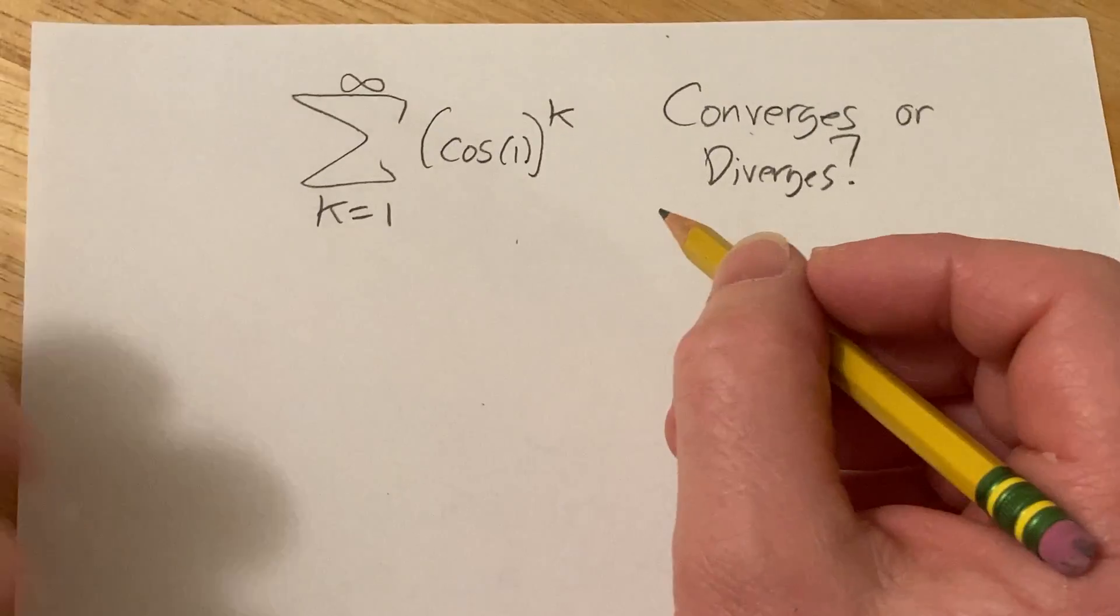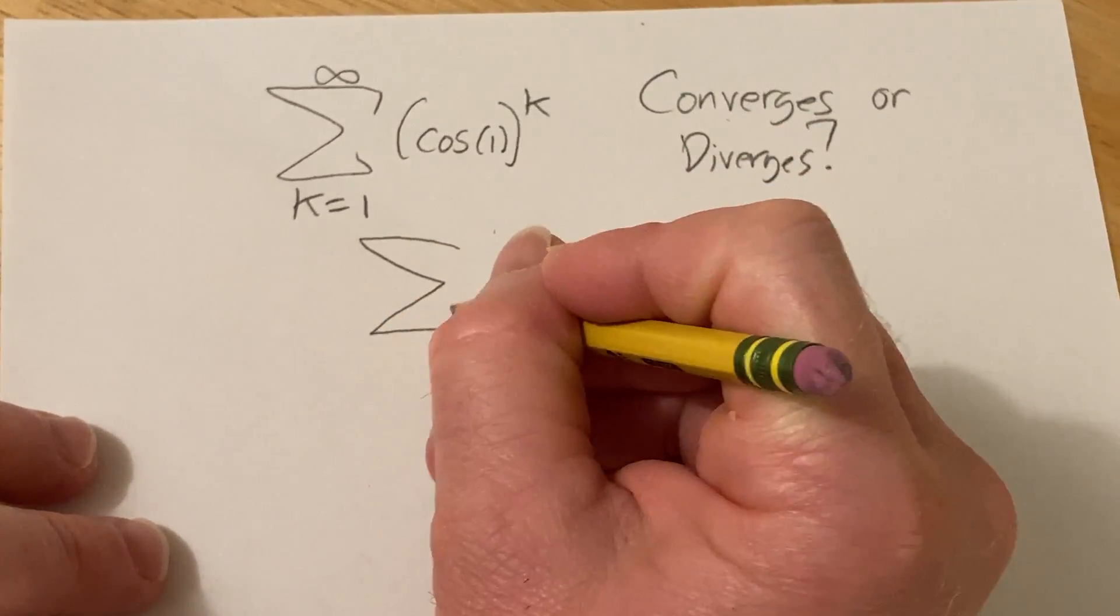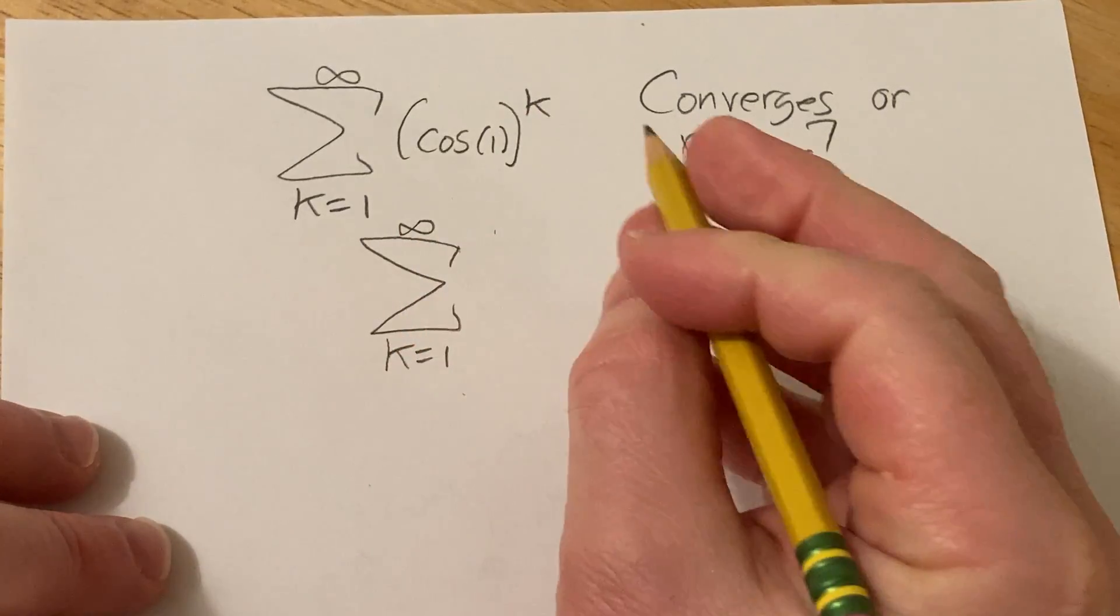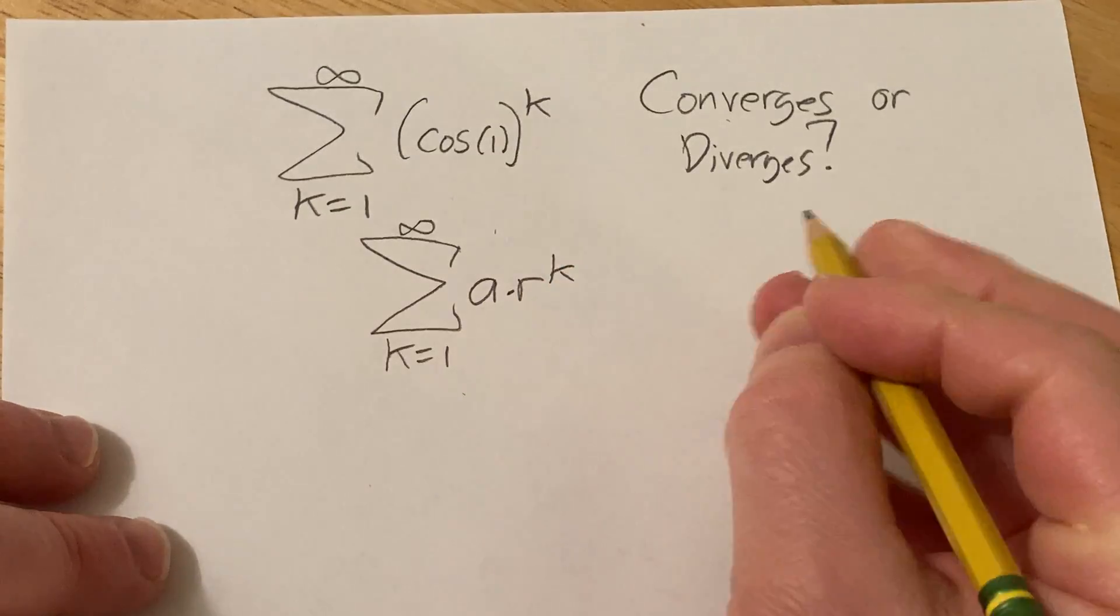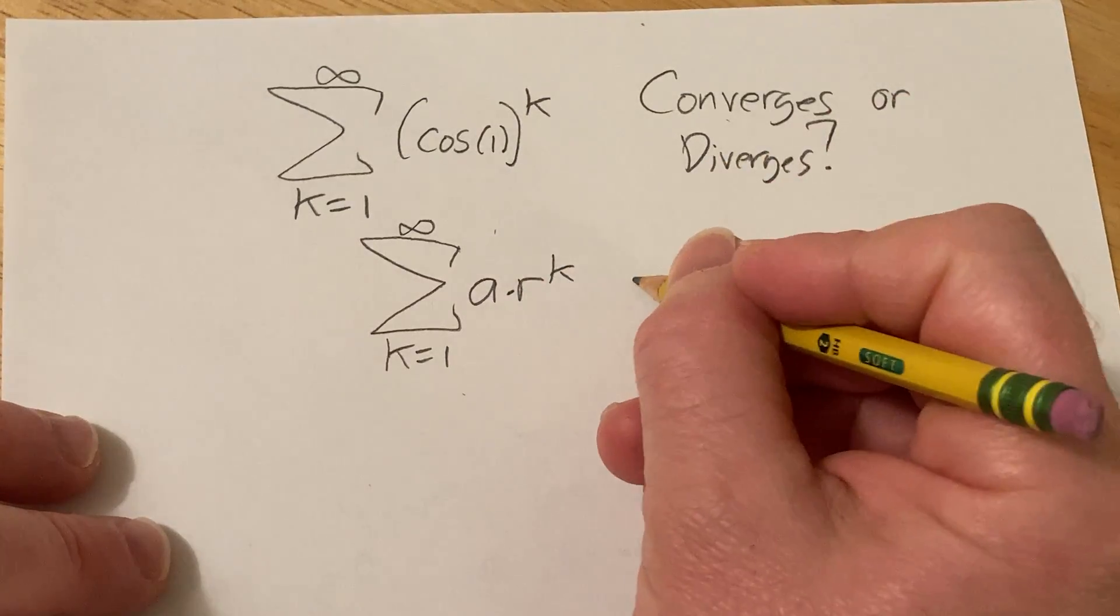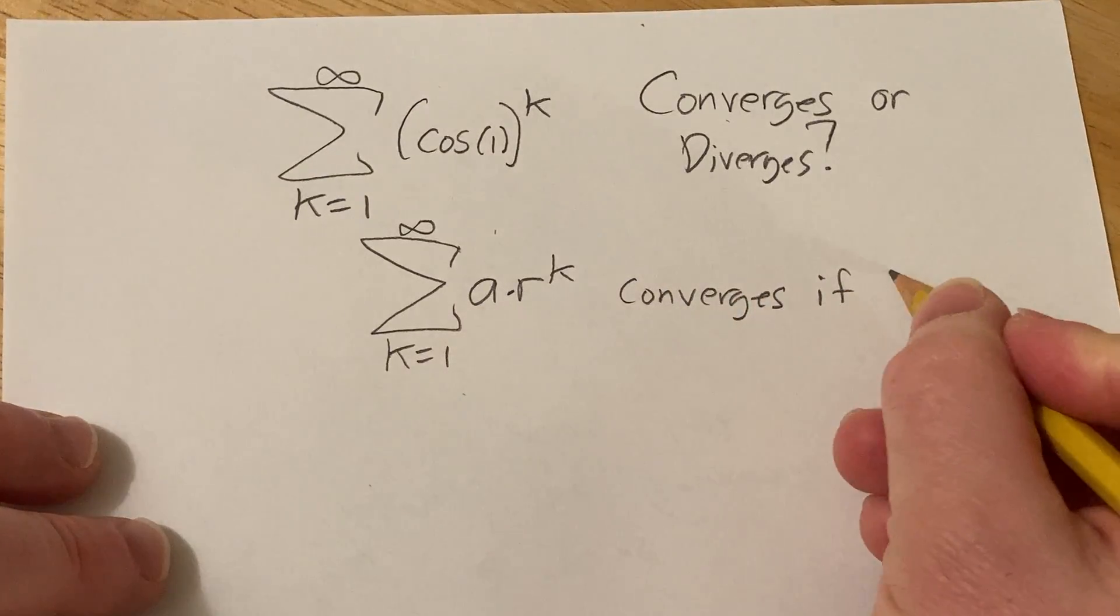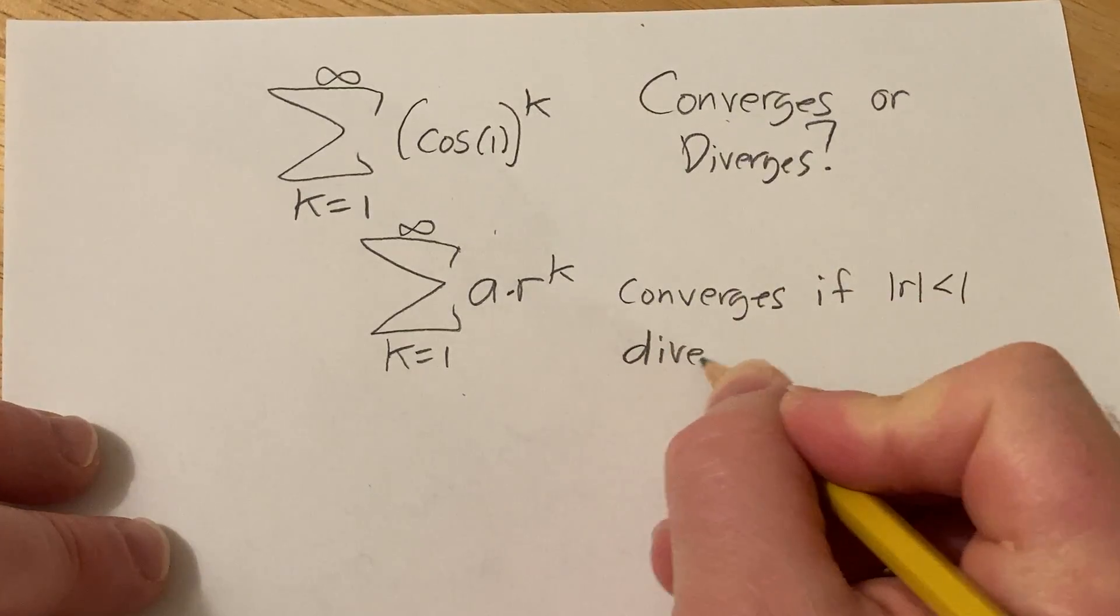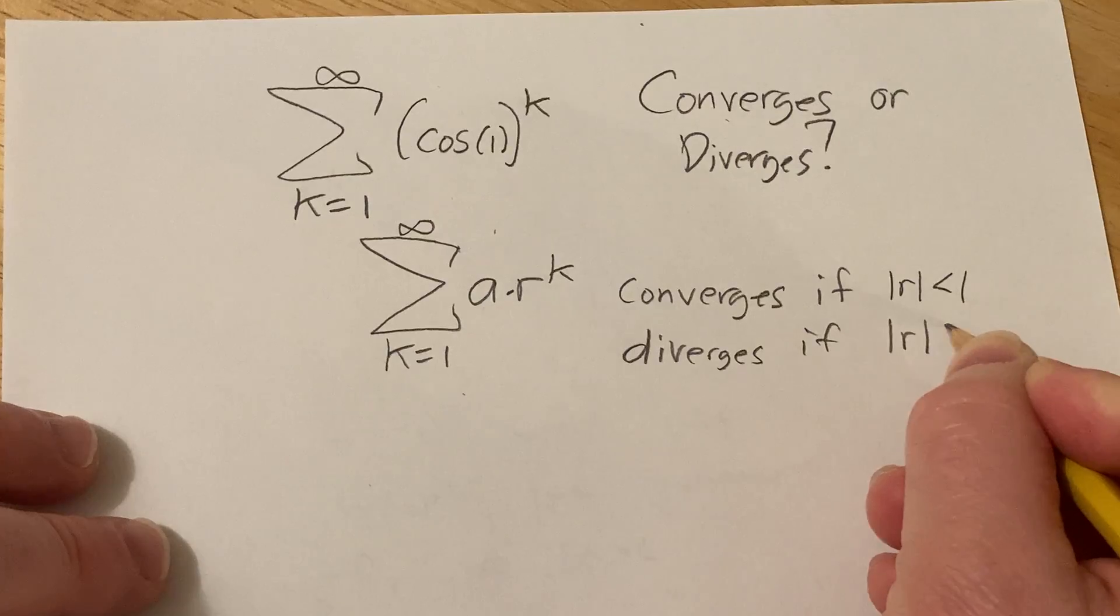So first note that this is what's called a geometric series. It has the following form, the sum from k equals 1 to infinity of a times r to the k. This is called a geometric series, and this series converges if the absolute value of r is less than 1, and it diverges if the absolute value of r is greater than or equal to 1.